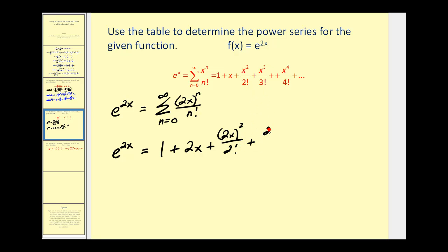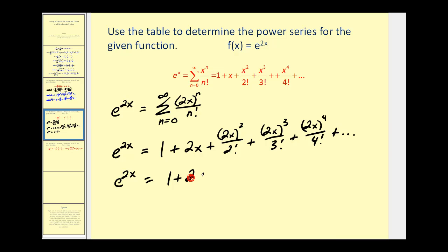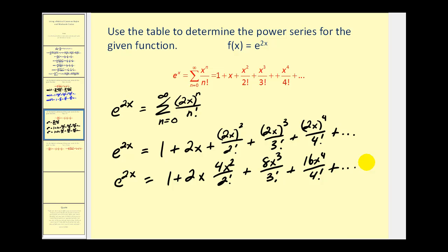Plus two x to the third divided by three factorial, plus two x to the fourth, and so on. Simplifying, we'll have one plus two x, plus four x squared divided by two factorial, plus eight x cubed divided by three factorial, plus sixteen x to the fourth divided by four factorial, and so on. We could simplify these fractions further, but we'll stop there.